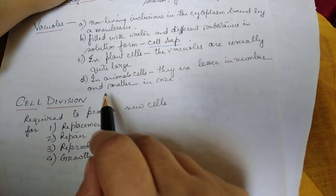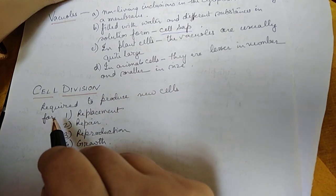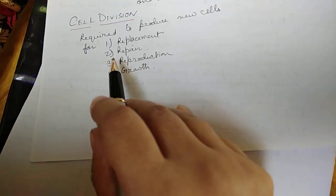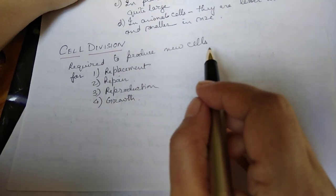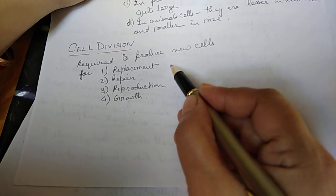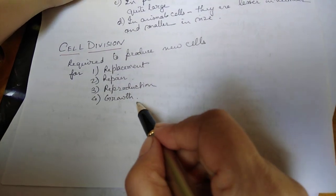Now cell division. The cell division is required to produce new cells for replacement, for repair, for reproduction and for growth.